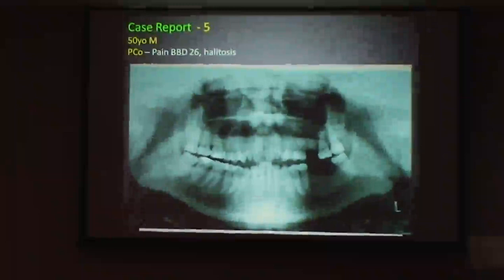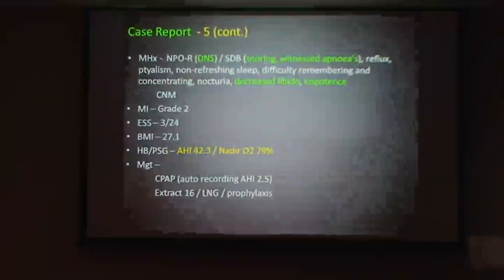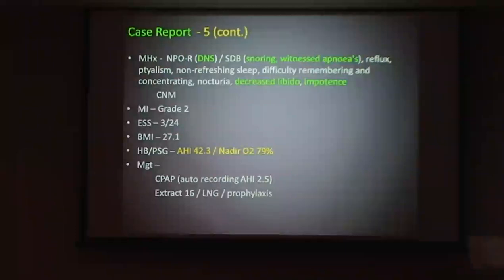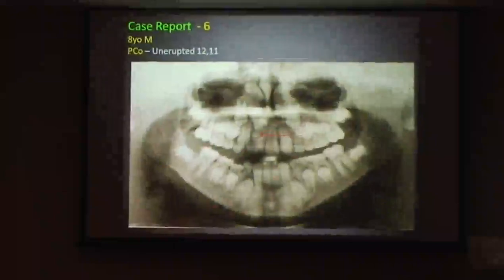Case five: a man with a badly broken-down top molar and terrible bad breath — and bad breath comes from acid. Medical history revealed impotence for a long time, unmedicated. Epworth of only three, BMI slightly elevated. Home-based sleep study came in at AHI 42 with oxygen dropping to 79%. Straight onto CPAP. He reported his sex life improved 100% within six months. I simply extracted the tooth, put him on a splint to protect his teeth, and kept it simple.